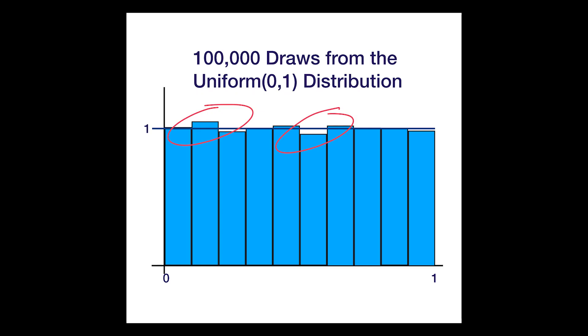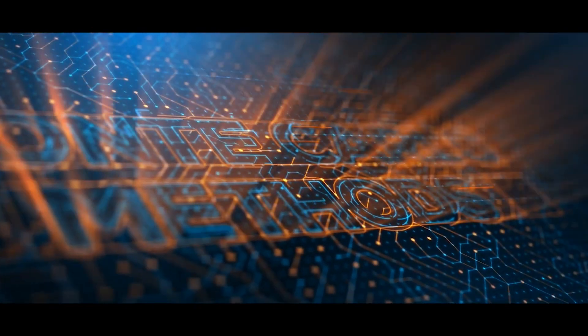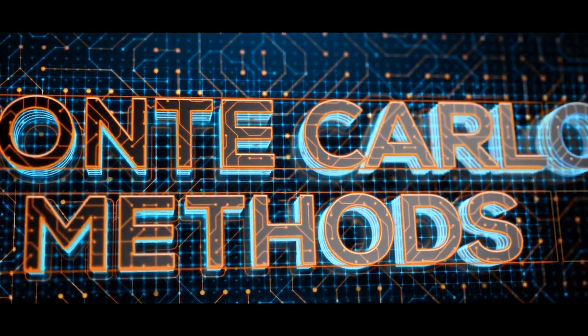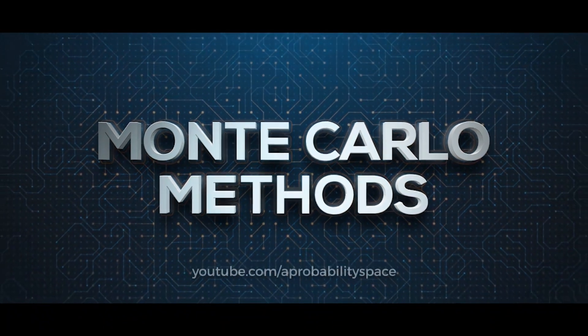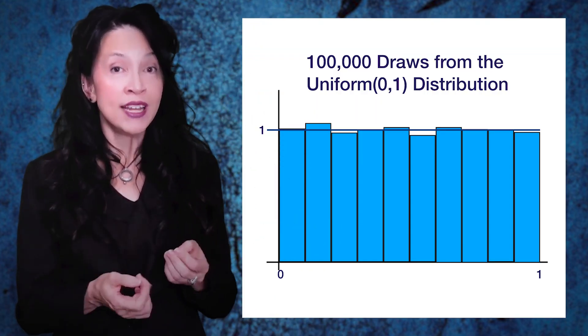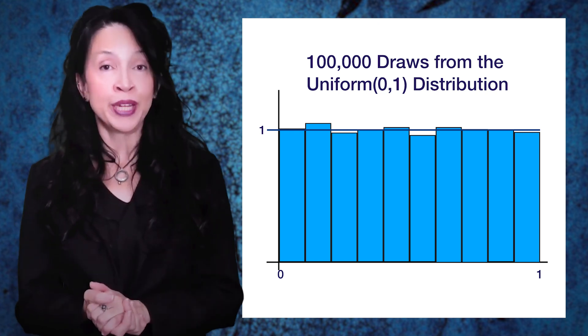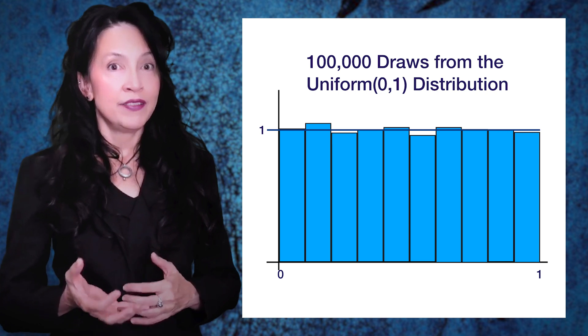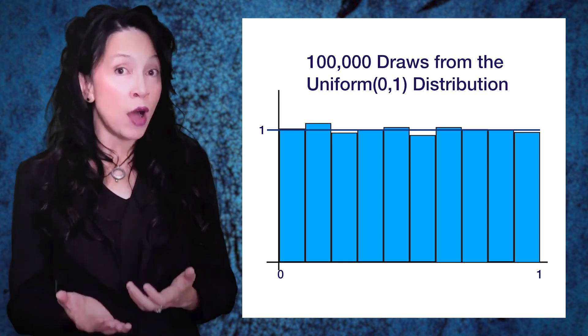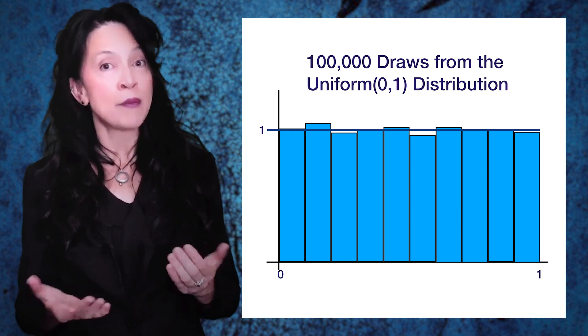So you generated 100,000 of them, and you made a histogram, then you slapped that perfect flat-line PDF on there. Is this bad? I generated 100,000 values using the built-in random number generator in R. I broke up the interval from 0 to 1 in increments of 0.1, then I made a histogram. You can see some bars are a little above the line, some are a little below the line. This line is the true PDF at height 1, and we want to figure out if this is bad.